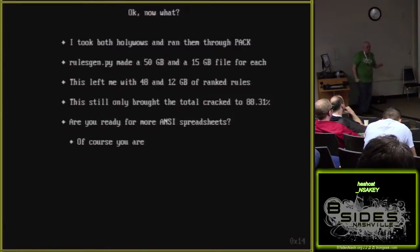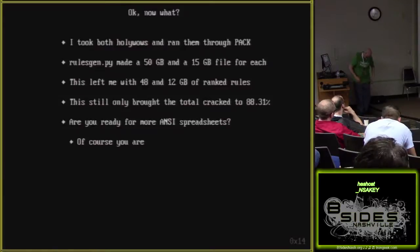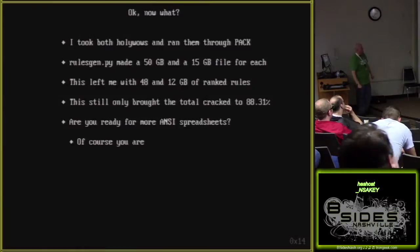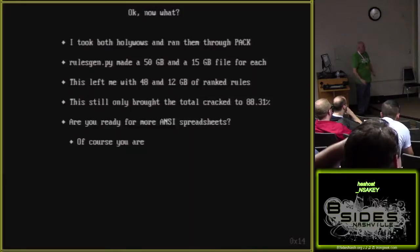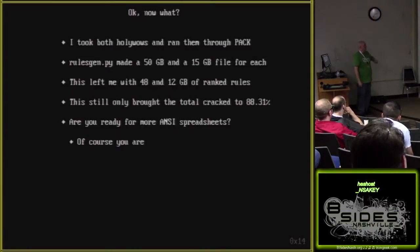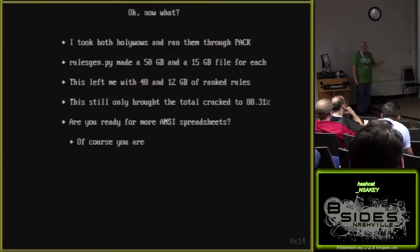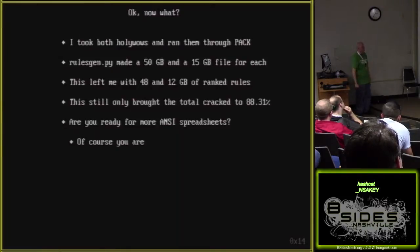This is where I started to have to use my brain. I took both Holy Wows and ran them through PACK. That three-gigabyte Holy Wow text file generated 50 gigabytes of rules; the second version generated 15 gigabytes. After sorting them I ended up with 48 and 12 gigabytes of ranked rules. Word of warning: if you want to attempt this, PACK will fall over and die if you throw this many passwords at it — it'll make a file but fail when it tries to sort. You'll have to use Unix tools: just 'sort -rnk1' and you'll be good to go.